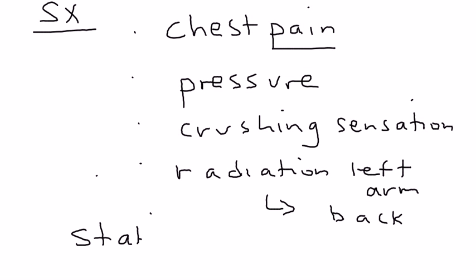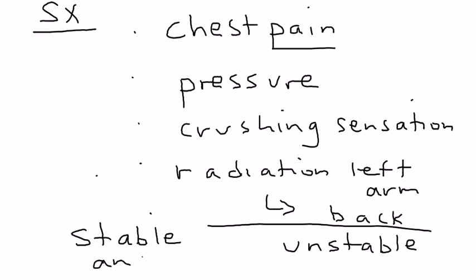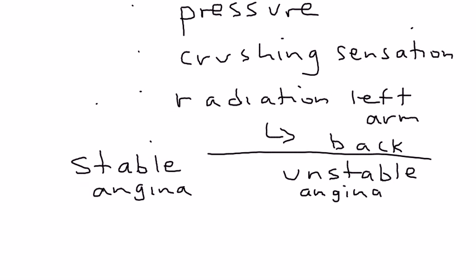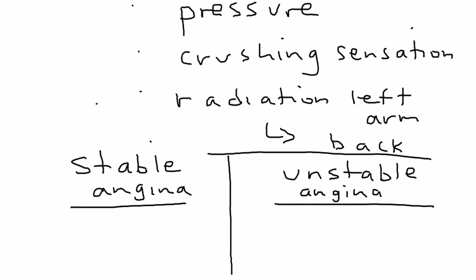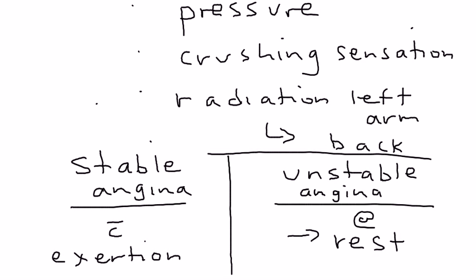There are two terms that are really important when it comes to angina: stable angina and unstable angina. The simplest way to describe the difference is that unstable angina is chest pain that occurs at rest, while stable angina occurs with exertion. Naturally, unstable angina is the more serious one.